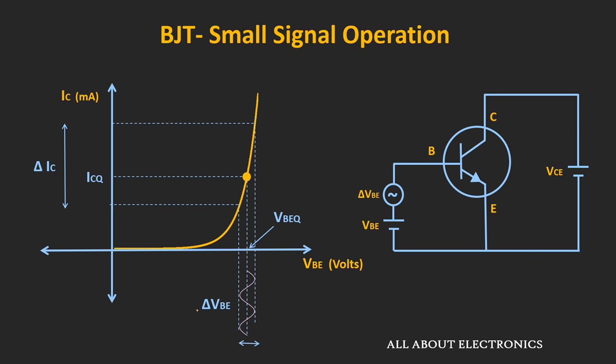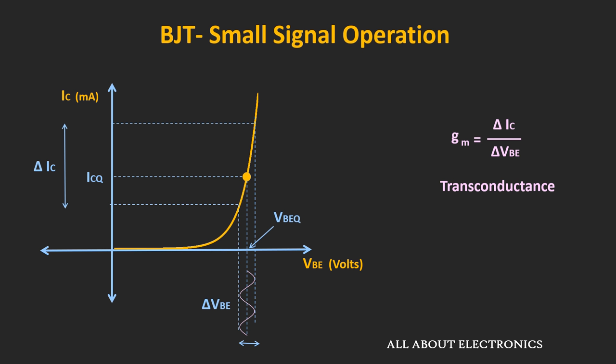Let's say this voltage is equal to ΔVBE. Because of this small perturbation, there will also be a change in the collector current. This change in the collector current to the change in the voltage VBE is defined as the transconductance — it shows how the change in VBE gets translated into a change in collector current. The unit of transconductance is either ampere per volt or Siemens.